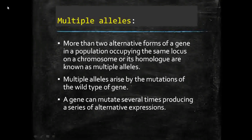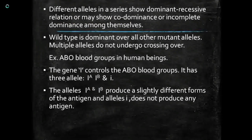Multiple alleles arise by mutations of the wild type of a gene. The genes mutate several times and produce a series of alternative expressions. During mutation, the genes change themselves and form different alleles in a series.